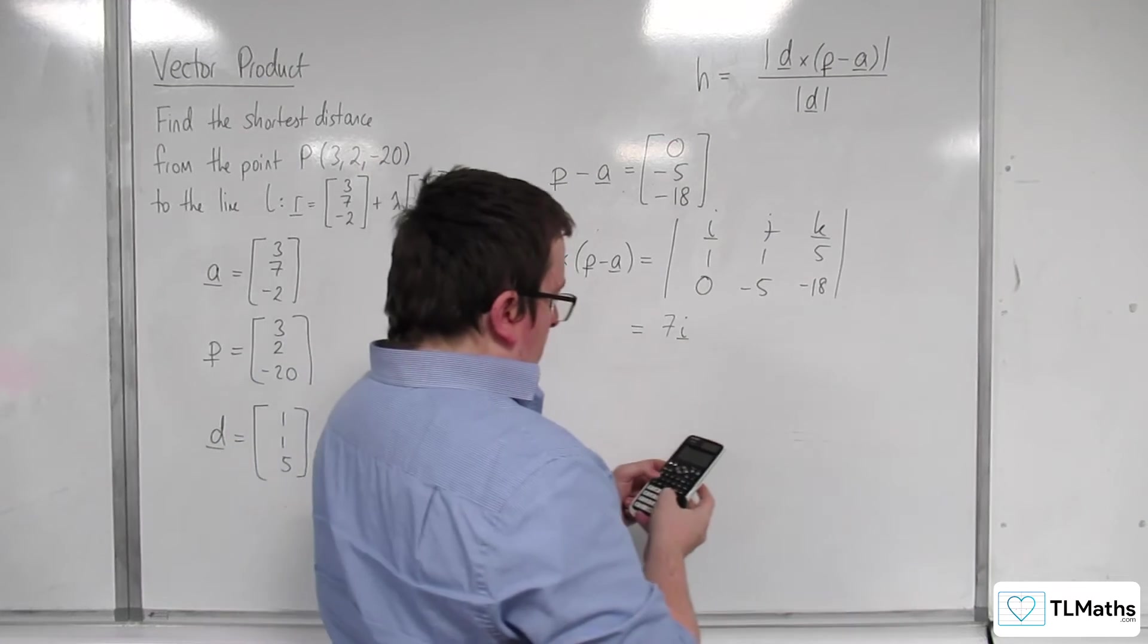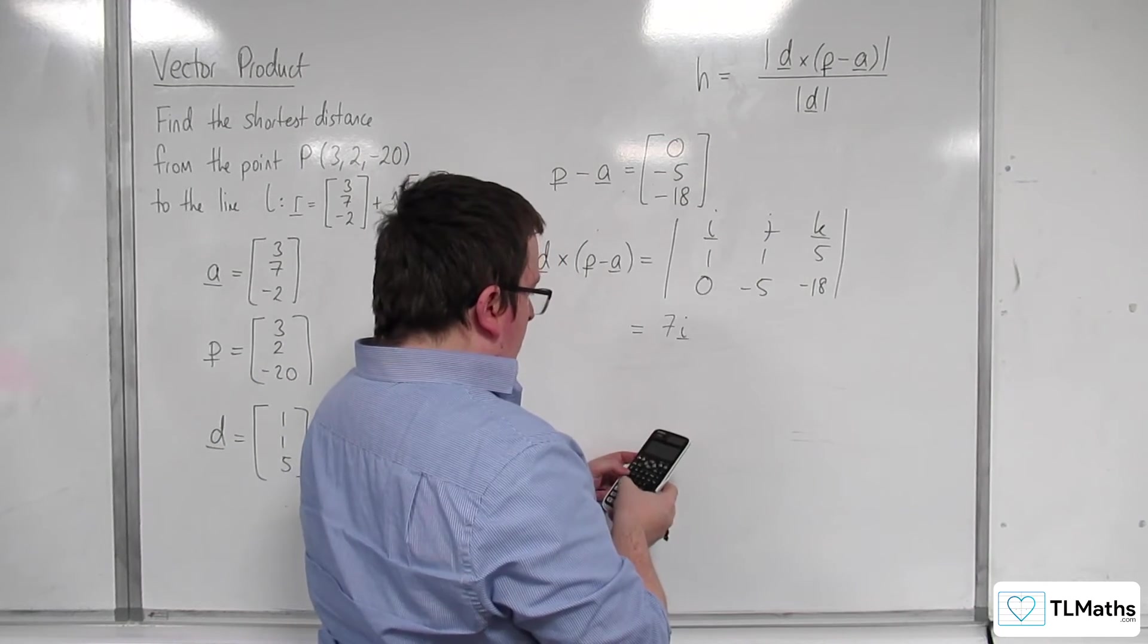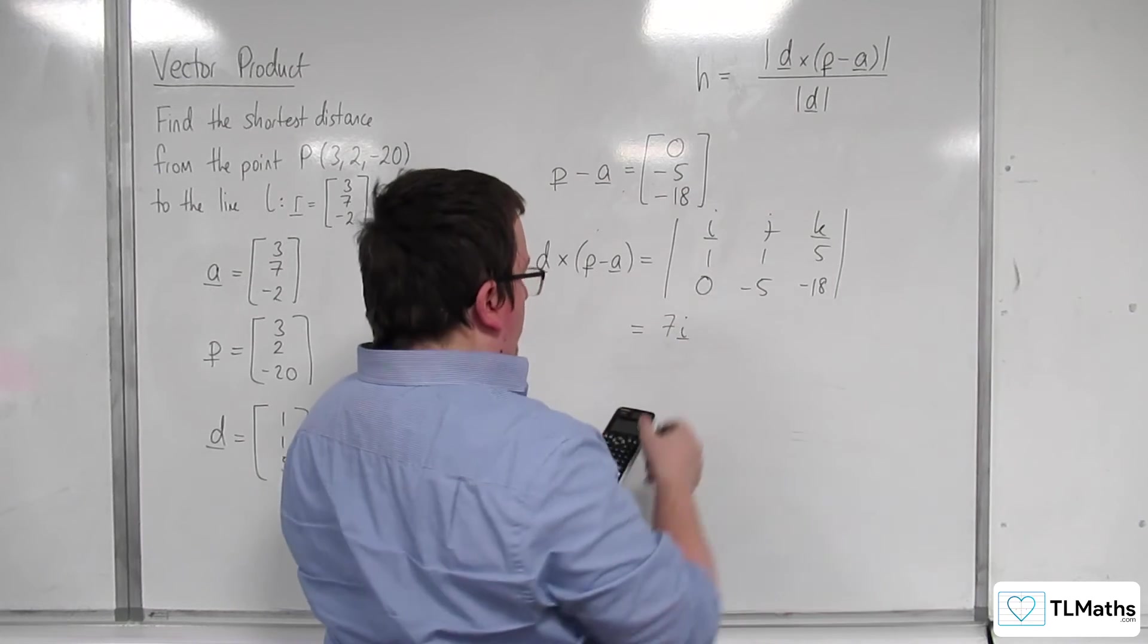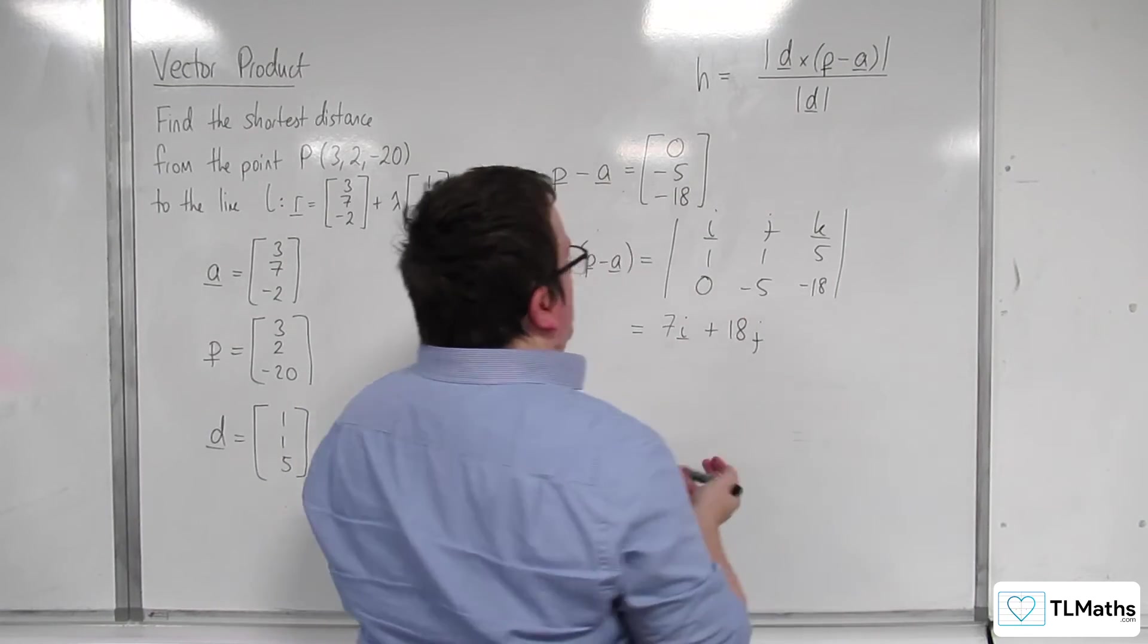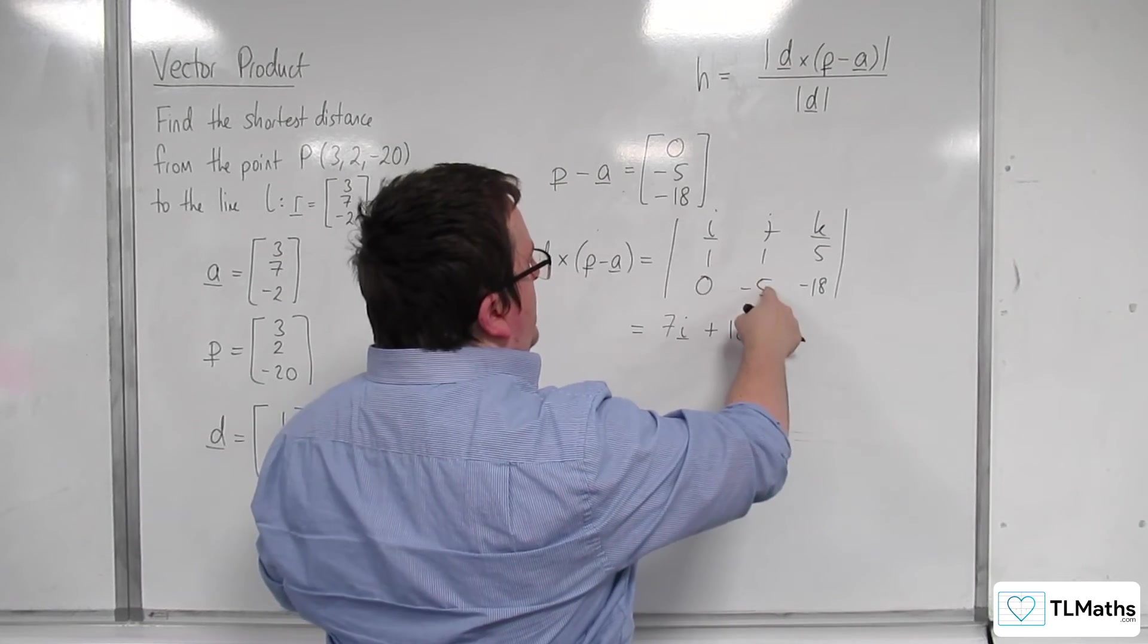Then we've got take away 1 times minus 18 take away 5 times 0. So that's just plus 18J, and then minus 5K.